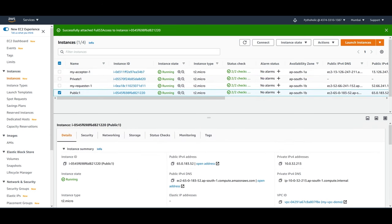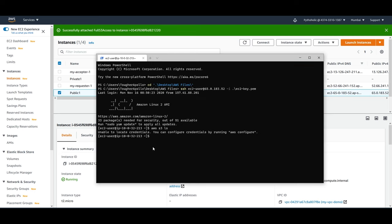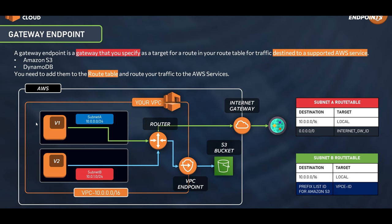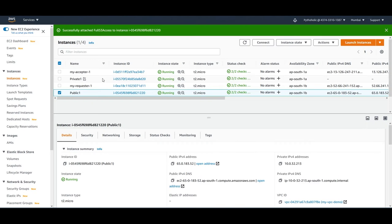Going back to the terminal and running 'aws s3 ls' again, we can now see the list of buckets. This works because it's a public instance accessing S3 through the internet gateway. The next goal is to have our private instance also connect to S3 buckets using a VPC endpoint. Let's connect to the private instance first to verify it's not working.